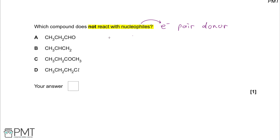First of all we've got A, which is propanal. B is propene. C is butanone, and D is 1-chloropropane.